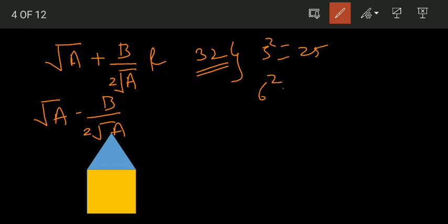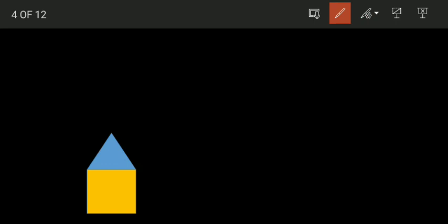So 32 falls between these two. So what to do? Write 32 like 25 plus 7. So here a is equal to 25 and b is equal to 7.